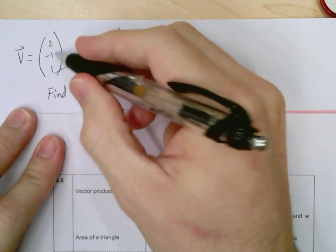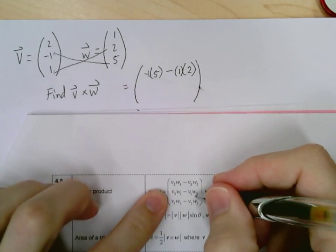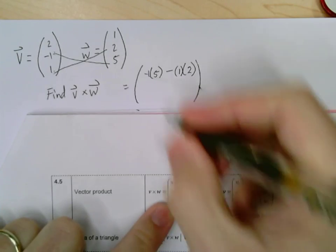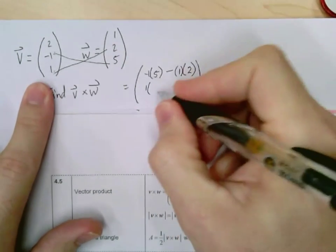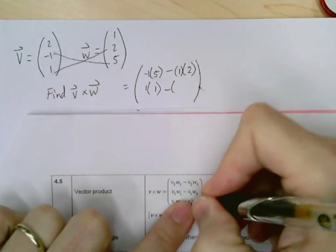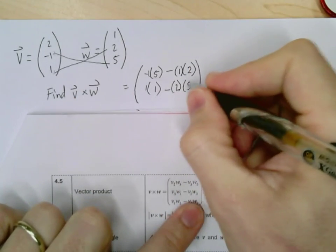Now you'll notice it was the Y and Z components that give us the X component. You'll see the same thing on the next two. Okay? So next we have V3 and W1. Alright? So V3 would be 1 times W1, which would be 1. And then minus V1, which was 2, times W3, which was 5.